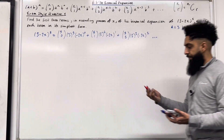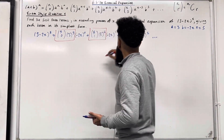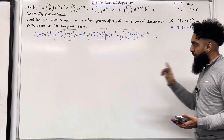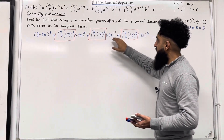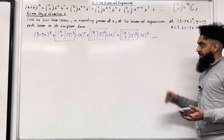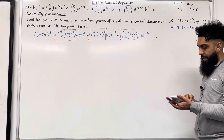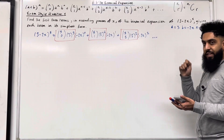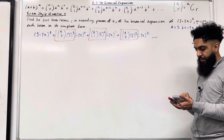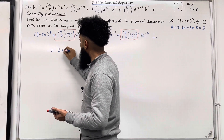I'm going to draw some boxes around specific elements and simplify each box, keeping the powers of (minus 2x) as they are. For the first box: 5 choose 0 — typing 5, shift, divide, 0 — gives 1. Multiplied by 3 to the power 5 gives 243. So the first box simplifies to 243.